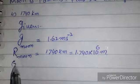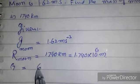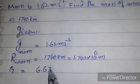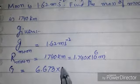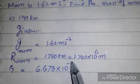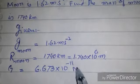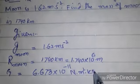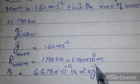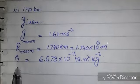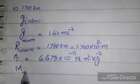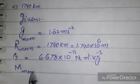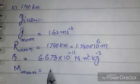We know G is equal to 6.673 into 10 raised to minus 11 newton meter squared per kilogram squared. We have to find the mass of moon, which is required.